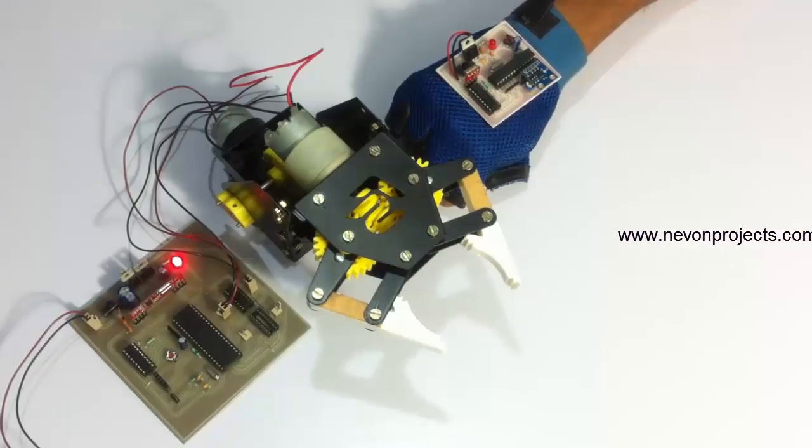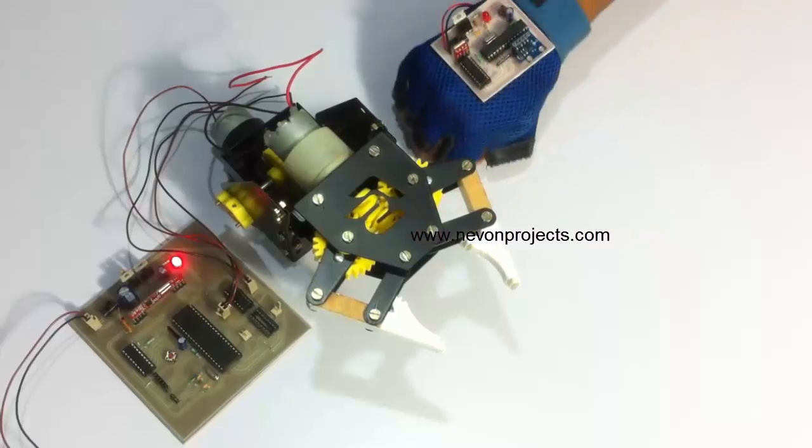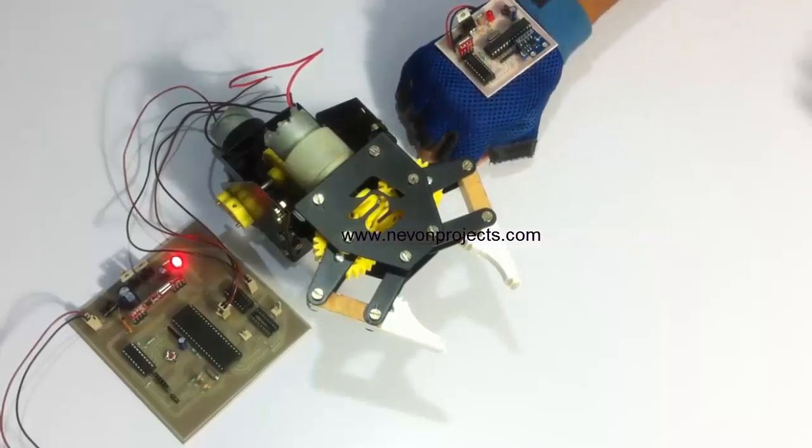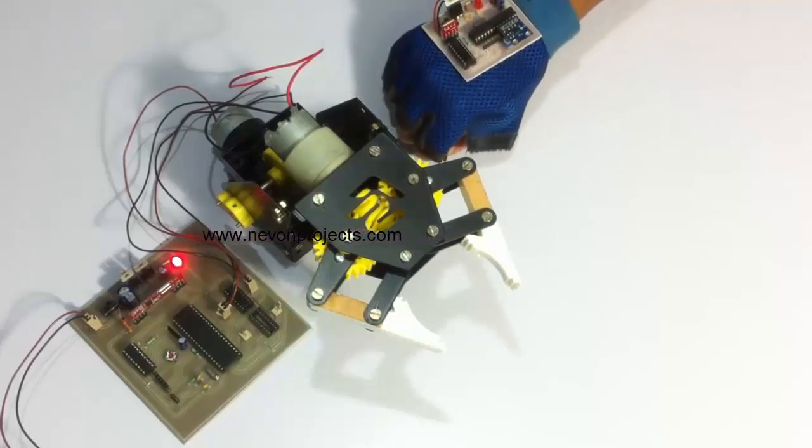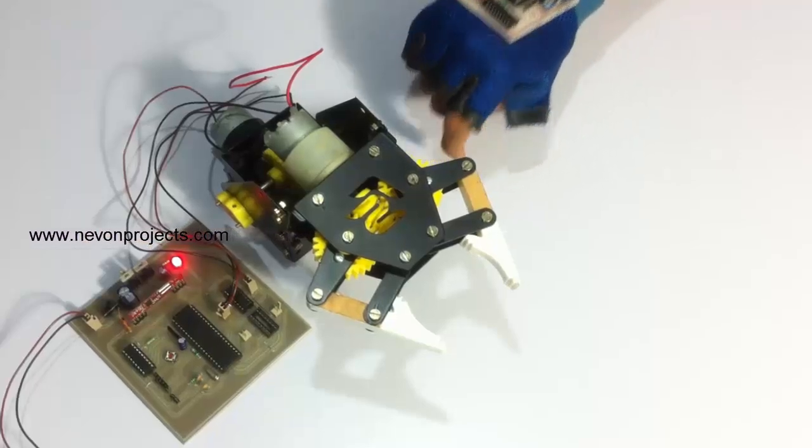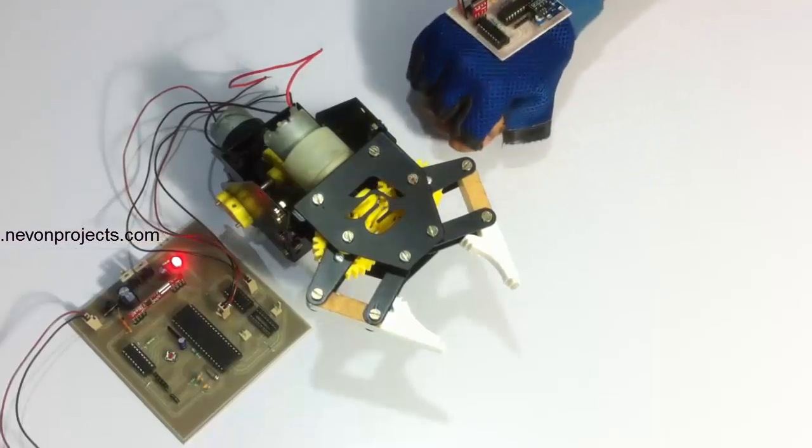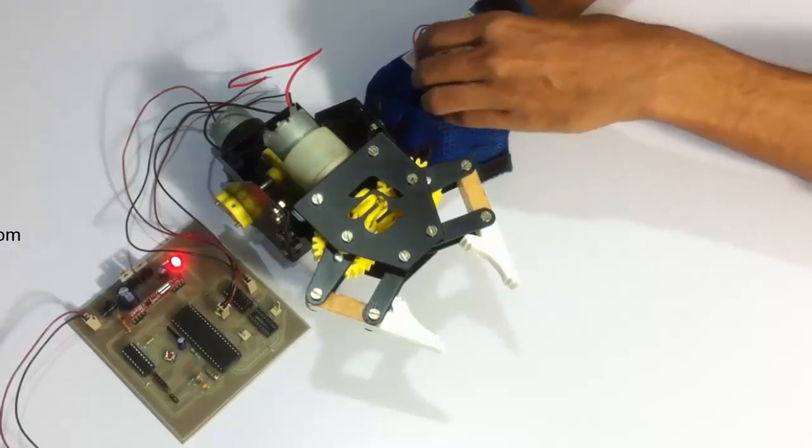The receiver circuit operates the arm to achieve desired movement commands. On the forward action, it moves the arm in downward direction. The backward action is used to move the arm up. Similarly, left and right are used to handle the grip to grip an object as well as ungrip an object.